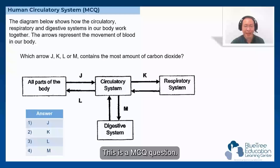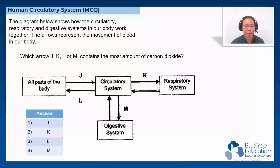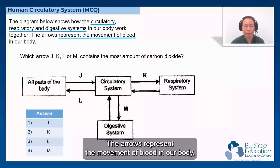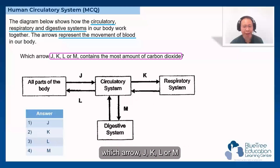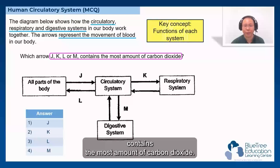This is an MCQ question. The diagram below shows how the circulatory, respiratory, and digestive systems in our body work together. The arrows represent the movement of blood in our body. Which arrow — J, K, L, or M — contains the most amount of carbon dioxide?